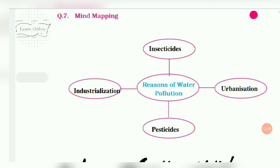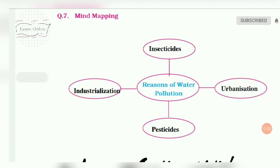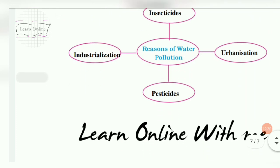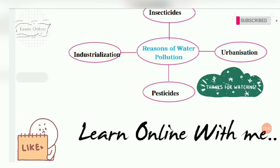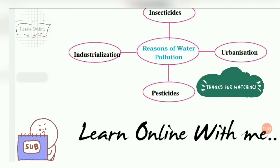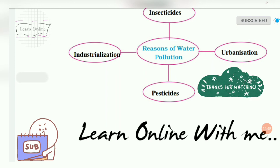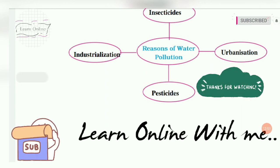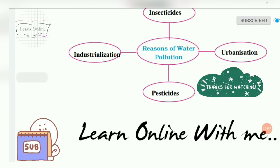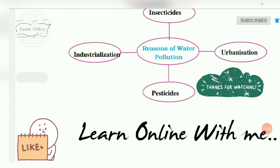The reasons for water pollution are insecticide use, urbanization, pesticides and industrialization. This completes the chapter. I hope through this video the chapter is well understood. Thank you for watching, and if you haven't subscribed yet, please subscribe to my channel. Thank you once again.